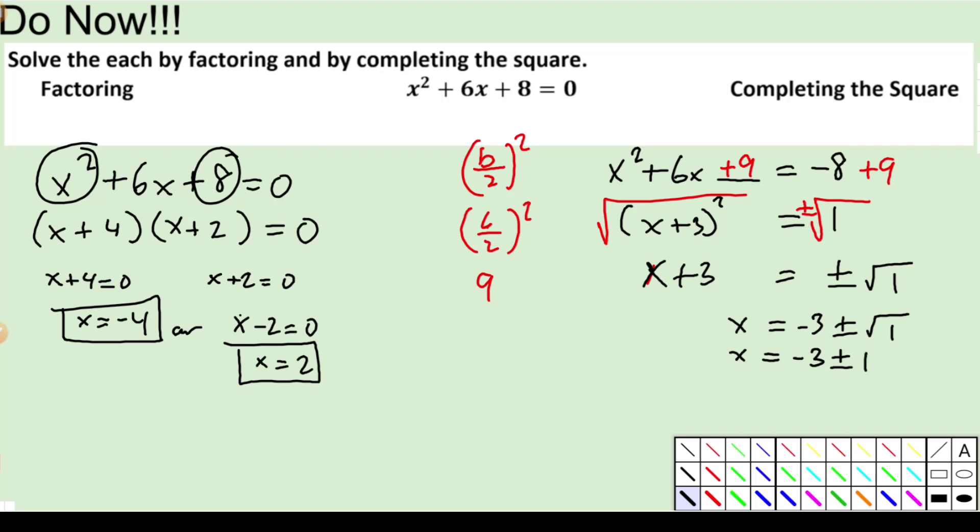Well, that's just 1. So we know this is x is equal to negative 3 plus or minus 1. So my two answers for this problem are going to be x equals negative 3 plus 1, and x equals negative 3 subtract 1. And my two answers for this problem are x equals negative 2, x equals negative 4.